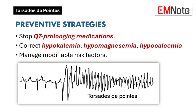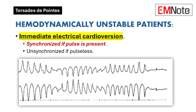Management of Torsades de Pointes includes addressing underlying risk factors and providing acute care for symptomatic patients. Preventive measures involve discontinuing QT-prolonging medications and correcting electrolyte abnormalities, including low potassium, magnesium, and calcium levels. Acute management depends on the patient's hemodynamic status. For unstable patients, immediate electrical cardioversion is recommended — synchronized cardioversion if a pulse is present, or unsynchronized defibrillation for pulseless patients.